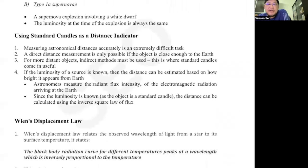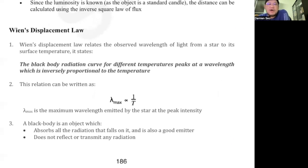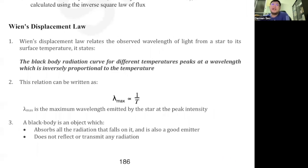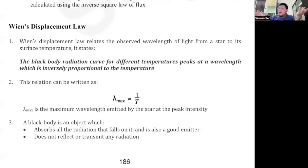The second section is on Wien's Displacement Law. This tells you about the relationship between the wavelength of radiation emitted from a star and the temperature of the star. Different stars have different temperatures — some are hotter, some are colder. How do astronomers know the temperature of a star? It's not like they went over there and measured the temperature using a thermometer.